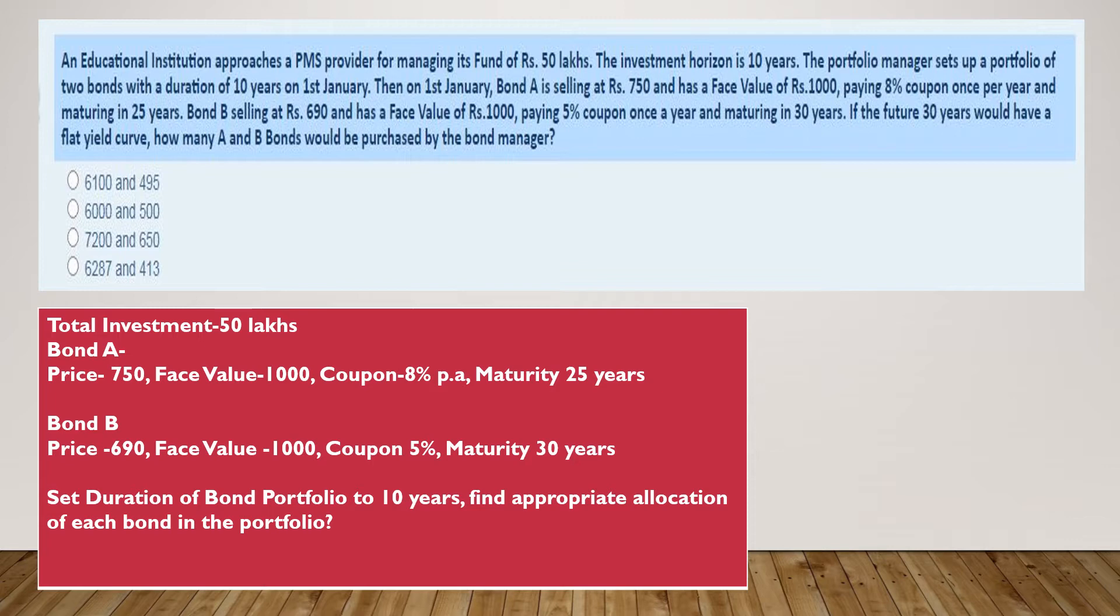Let me read the problem quickly for you. An educational institution approaches the PMS, which is a portfolio management service provider, for managing its fund of 50 lakhs. So it is very clear here that the fund that is going to be managed is 50 lakhs. The investment horizon is 10 years. The portfolio manager sets up a portfolio with two bonds.